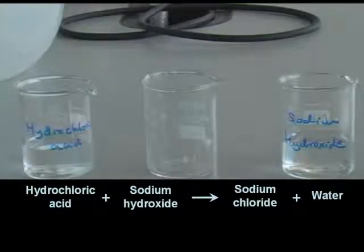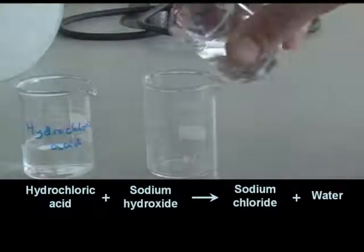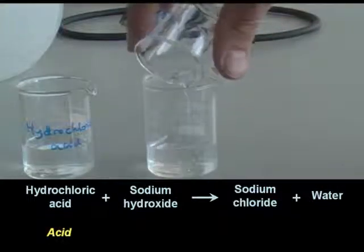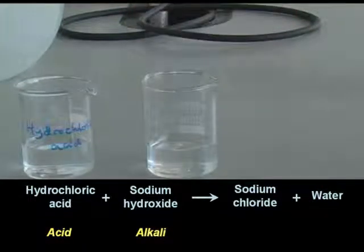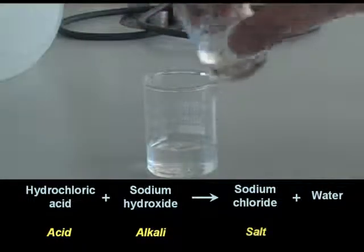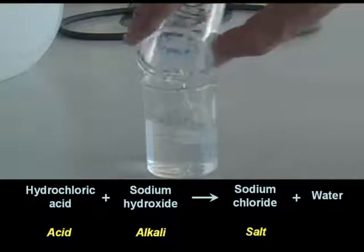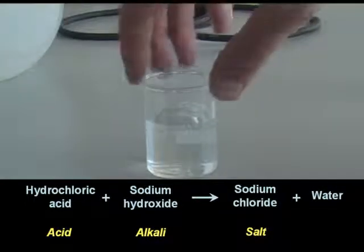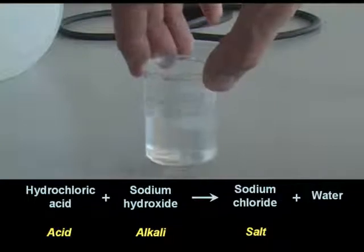Here you can see an example of a salt being formed. If we take the acid, hydrochloric acid, and react it with the alkali sodium hydroxide, we form a salt called sodium chloride. And this is commonly known as table salt. Don't forget that water is also produced in this reaction.